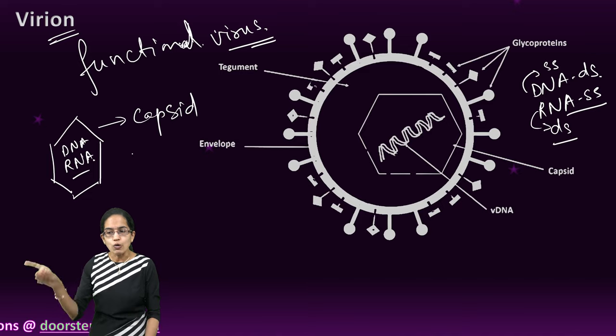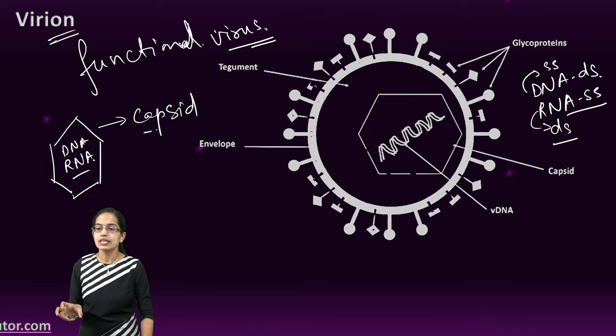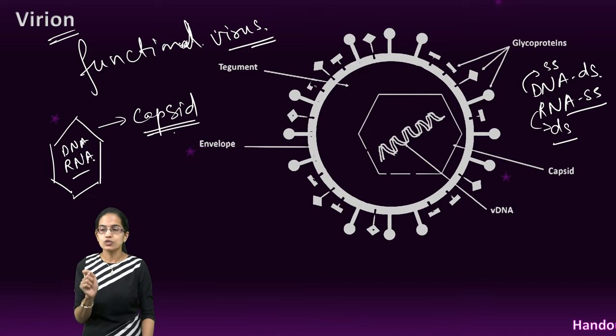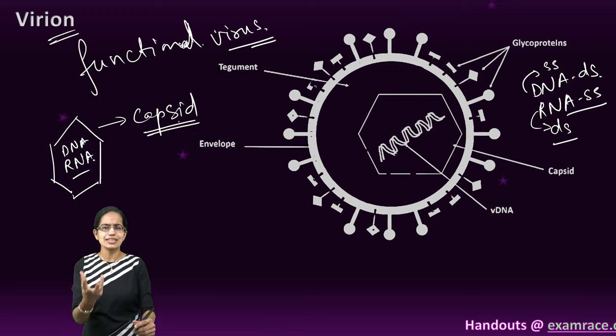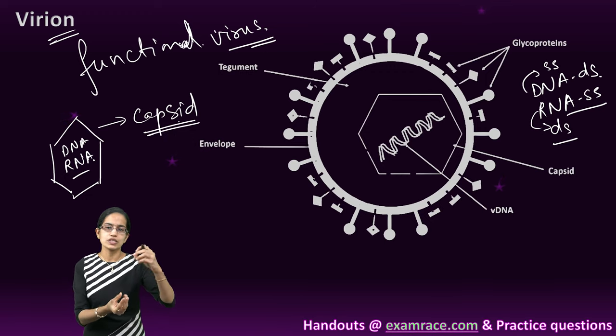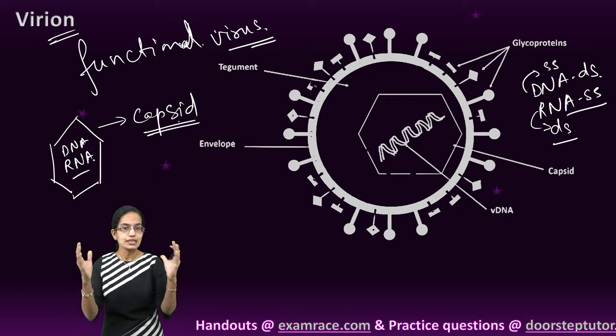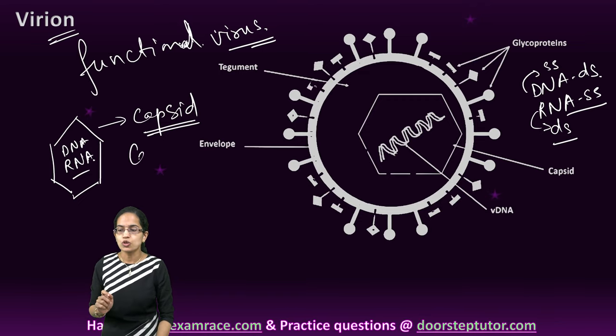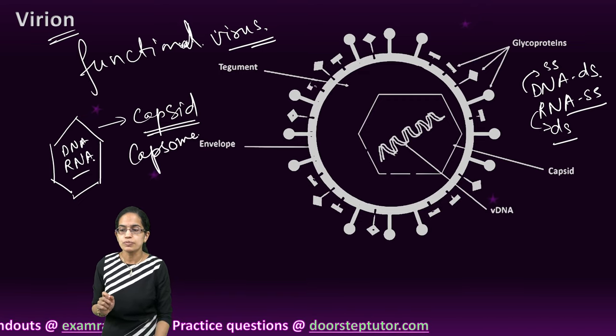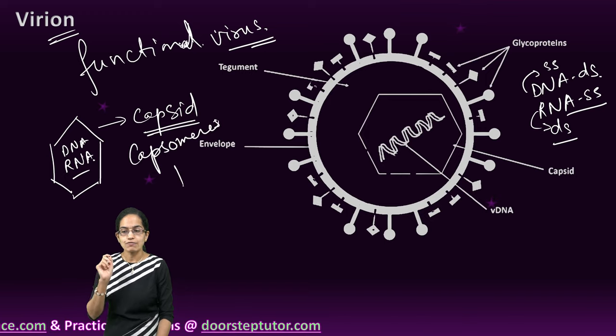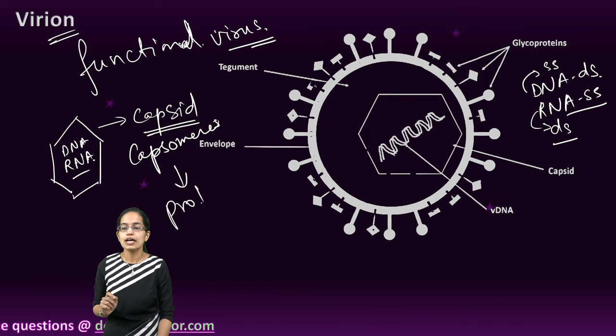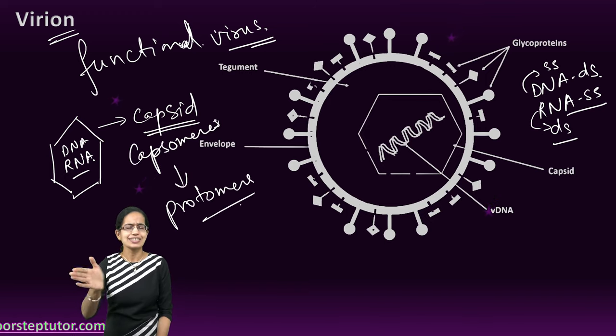The outer coat, which is made of capsid, has smaller subunits known as capsomeres. These could be considered as Lego blocks which could be arranged together to make the capsid. These capsomeres further have the monomer unit known as protomers, which we would understand further in a separate lecture.